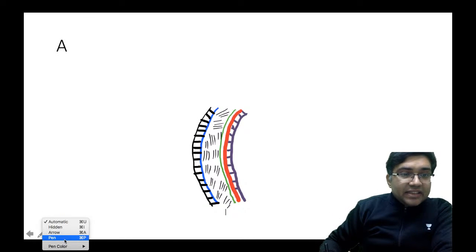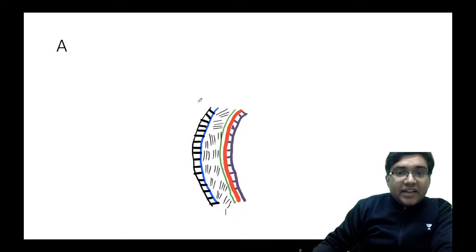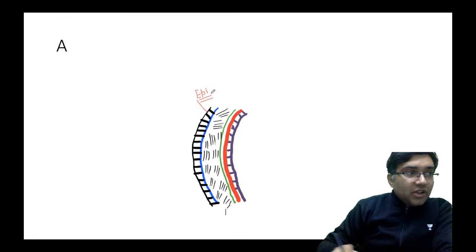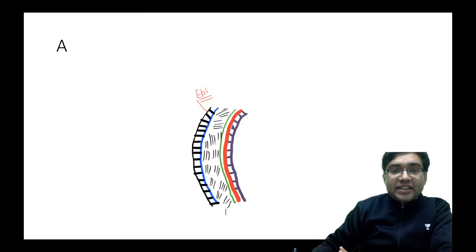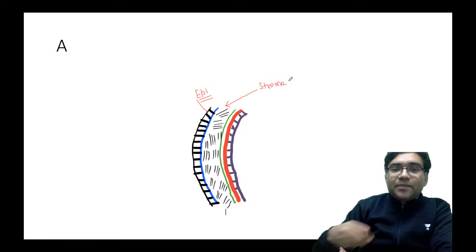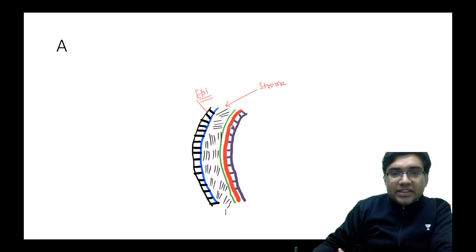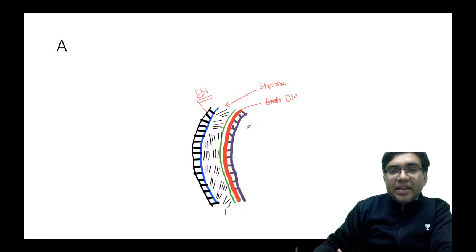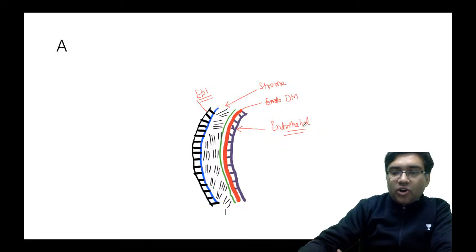The thickest layer of the cornea is the stromal layer — you can see the lamellar arrangement of collagen fibers there. Beneath the stroma is Descemet's membrane, a very tough membrane. The last layer in contact with the aqueous humor is the endothelial layer. This is the basic structure of your cornea.